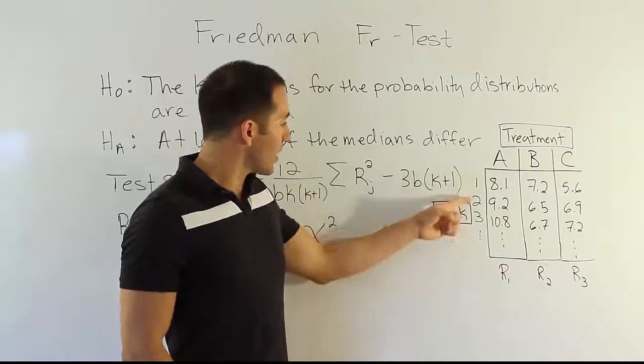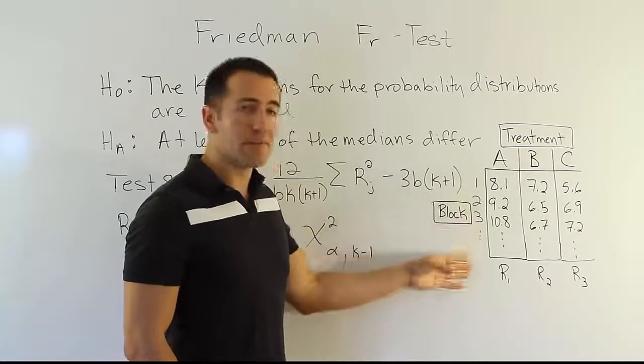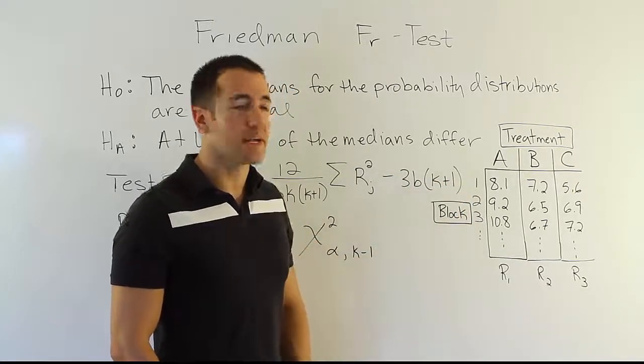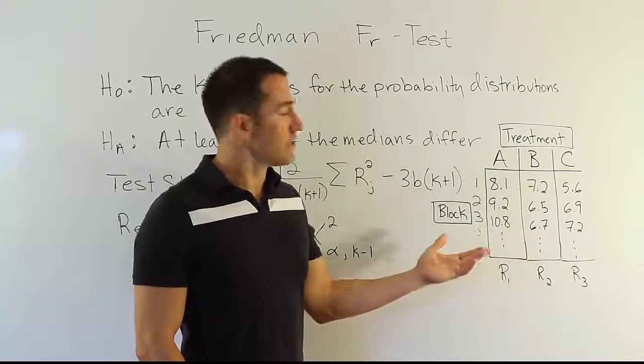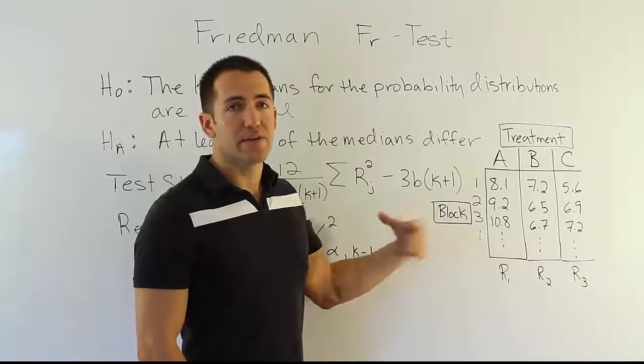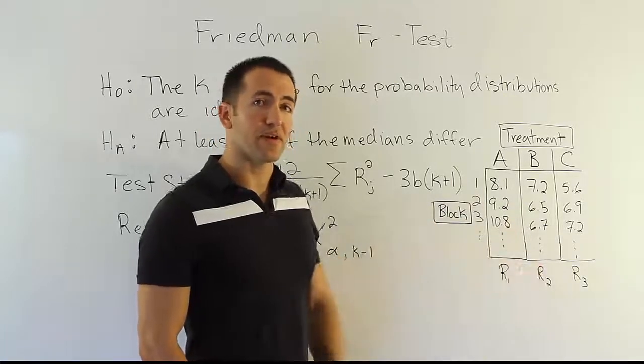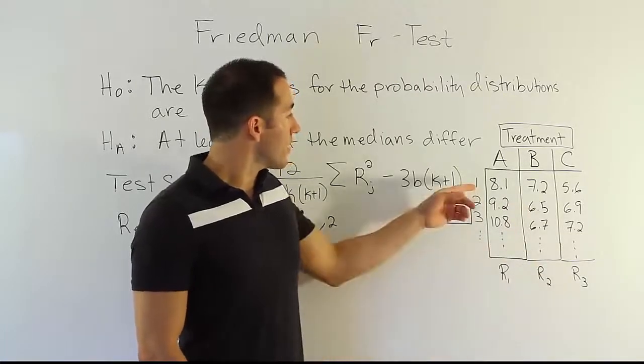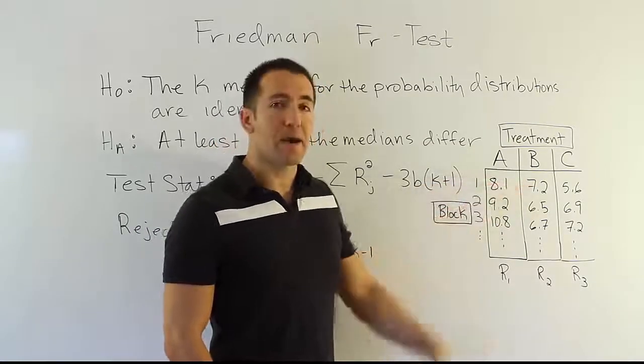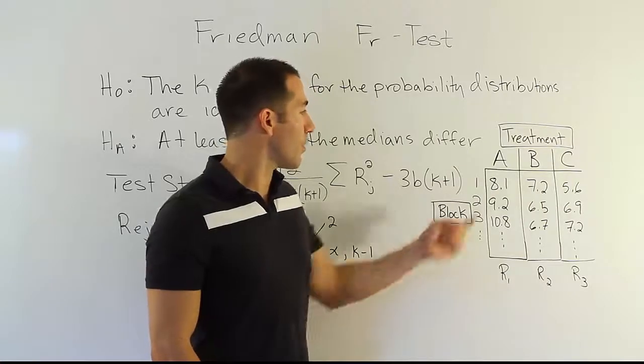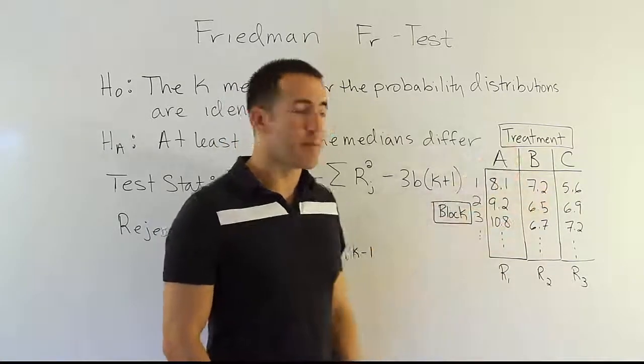And so in this case, we might have, as the blocks, the different people that are going to be given these three different allergy medications. So we'd randomly decide in which order they would take the allergy medications, and obviously we'd wait for the drug to be completely out of the system before giving them another dose on another day. But either way, in this case, maybe the experiment was that we have them do some reaction time test and we time the reaction time while on drugs A, B, and C separately.